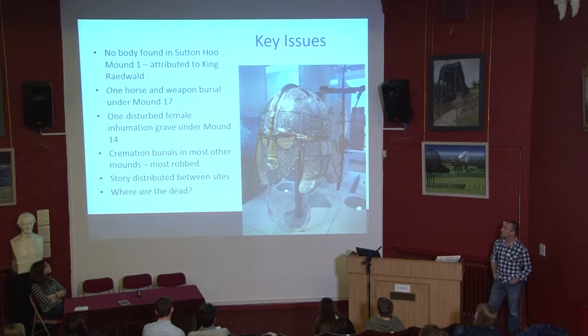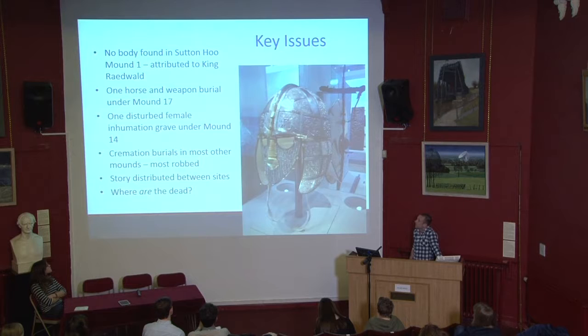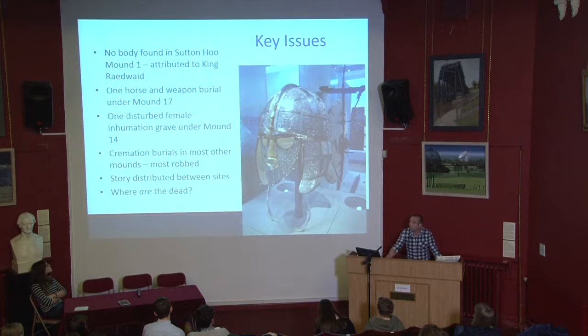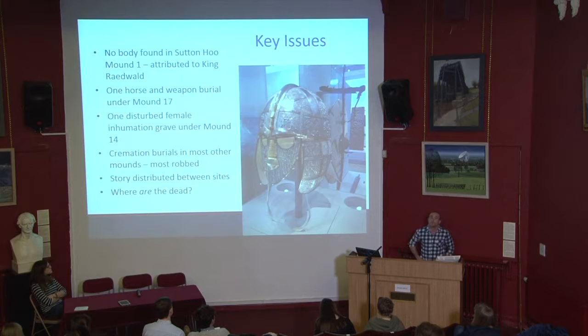No body was fine — attributed to King Raedwald. Another burial under Mound 17 was a horse and weapon burial, a very male upper-class thing to be buried with. Swords specifically gave a lot of prestige to the burial. One disturbed female inhumation grave under Mound 14, cremation burials in other mounds mostly robbed. The acidic soil destroyed the remains, but the material culture and what remains — their shadow — can still tell a story. Thank you.